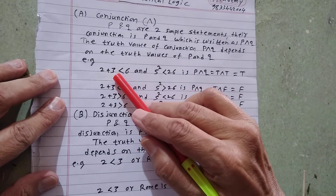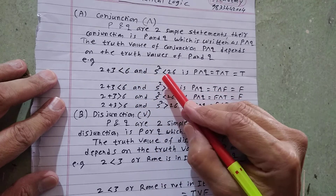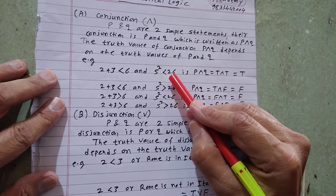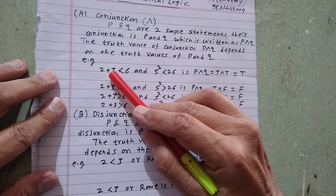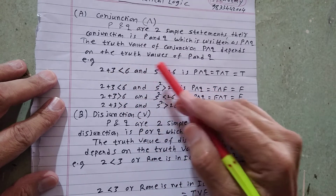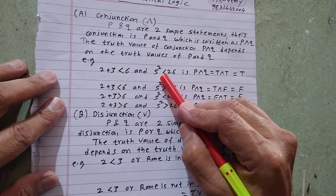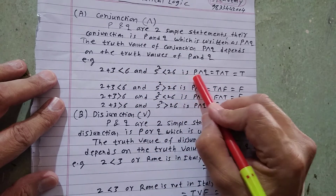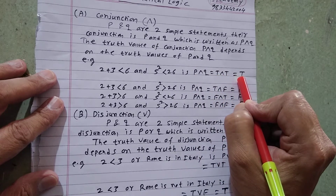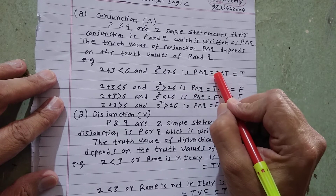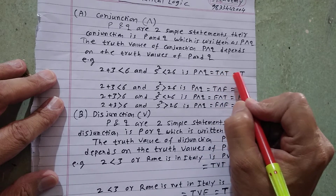Example: '2 plus 3 less than 6' AND '5 squared less than 26'. The first statement is true and the second statement is also true. That is, P AND Q equals T AND T, which equals T. Capital T stands for true.